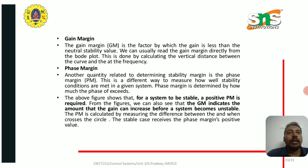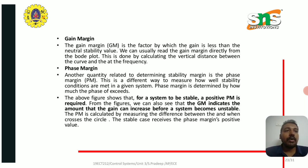The gain margin is the factor by which the gain is less than the neutral stability value. We can usually read the gain margin directly from the Bode plot by calculating the vertical distance between the magnitude curve and 0 dB at the phase crossover frequency. Phase margin is another quantity used to determine stability; it measures how much phase of the system remains before instability. For a system to be stable, a positive phase margin is required, and the gain margin indicates the amount the gain can increase before the system becomes unstable.